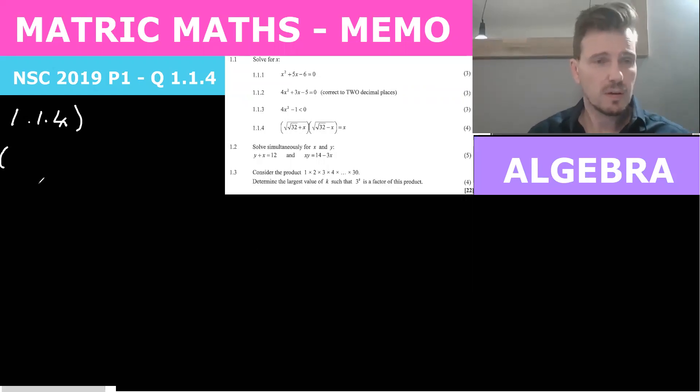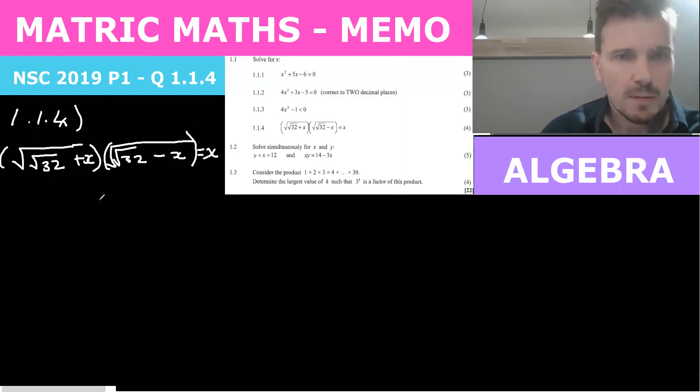So let's just write it out here. We've got a whole bunch of square roots within square roots. So there's actually another square root there. Minus x equals x. Okay, so let's see how we're going to tackle this.